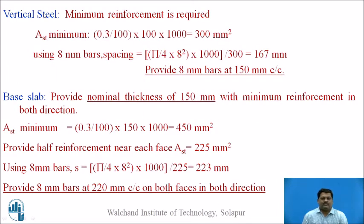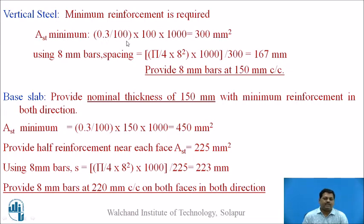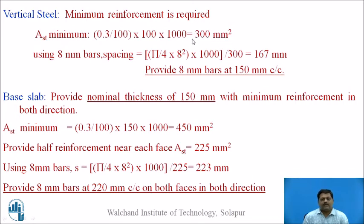Horizontal steel is already designed for hoop tension: 12 mm bars at 200 mm c/c. In the vertical direction, reinforcement is required based on minimum reinforcement criteria. Minimum A_st = 0.3% = 0.3/100 × 100 mm thickness × 1000 mm = 300 mm² per metre. This must be distributed in both directions; vertical steel shall be provided on the inner face of the wall. Using 8 mm bars, spacing = (area of 1 bar × 1000) / 300 = 167 mm. Provide 8 mm bars at 150 mm centre-to-centre as vertical steel.